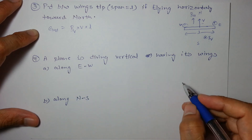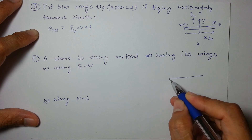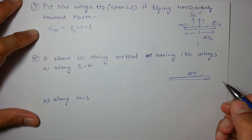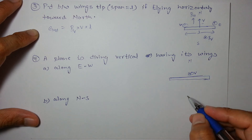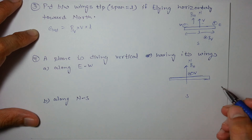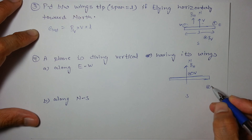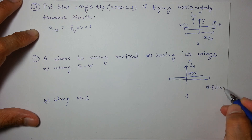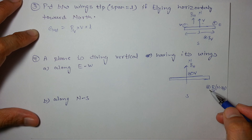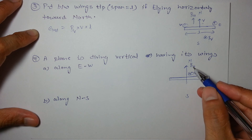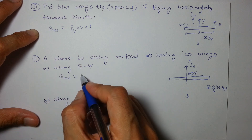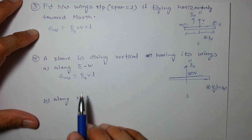Next example: the plane is diving vertically downward with its wings along the east-west direction. We are in the northern hemisphere, so the magnetic field BV is downward. Since V (downward) is parallel to BV, BV will not cause any EMF. The EMF is caused only by BH, so EMF induced = BH × V × L.